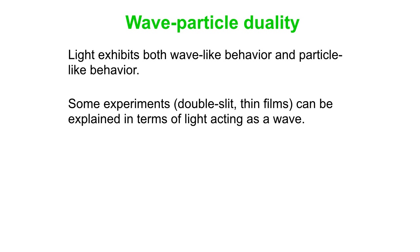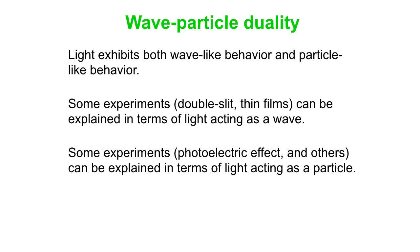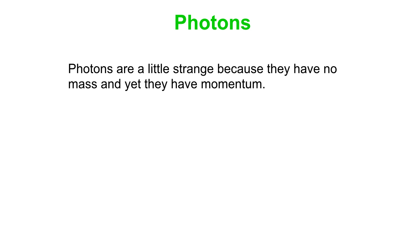On the other hand, we have other experiments - the photoelectric effect and the Compton effect - that can be explained in terms of light acting as a particle. Sometimes light acts like a wave, sometimes it acts like a particle. The particles of light are known as photons, and photons are a little bit odd because they have no mass and yet they still carry momentum.